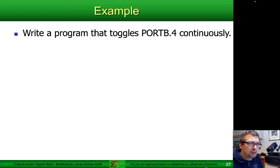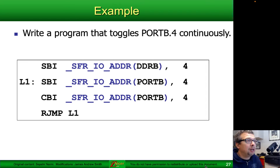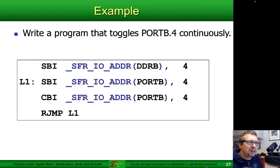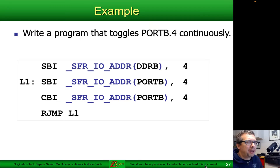Here's an example of writing a program that toggles port B bit 4 continuously. We set data direction register bit 4 to make it an output, then inside a loop labeled L1, we do SBI SFRIO address port B bit 4 to make it high, then clear it to make it low. There's no delay, so it will toggle very quickly — too fast to see on an LED at any reasonable clock rate.